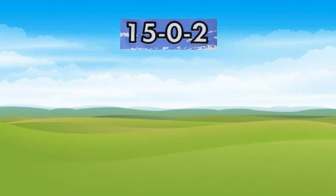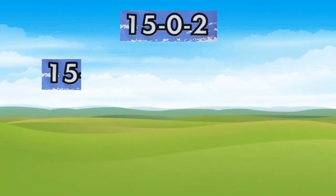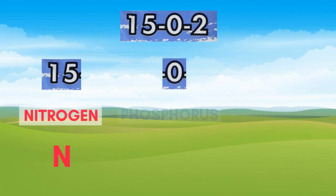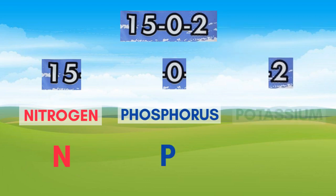In this example, 15 refers to the amount of nitrogen, abbreviated N. 0 refers to the amount of phosphorus, abbreviated P, and 2 refers to the amount of potassium, abbreviated K.